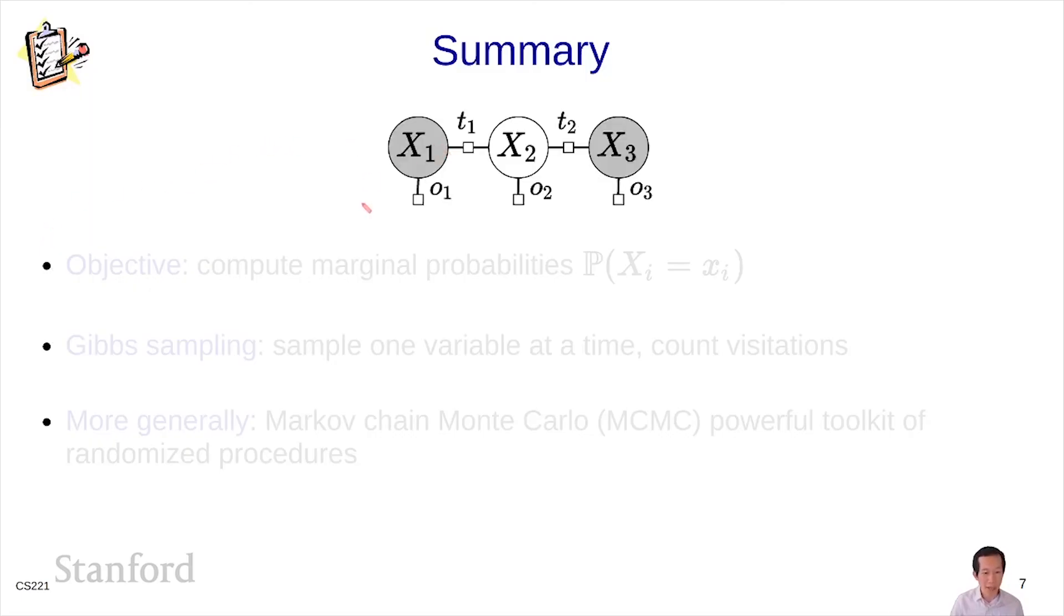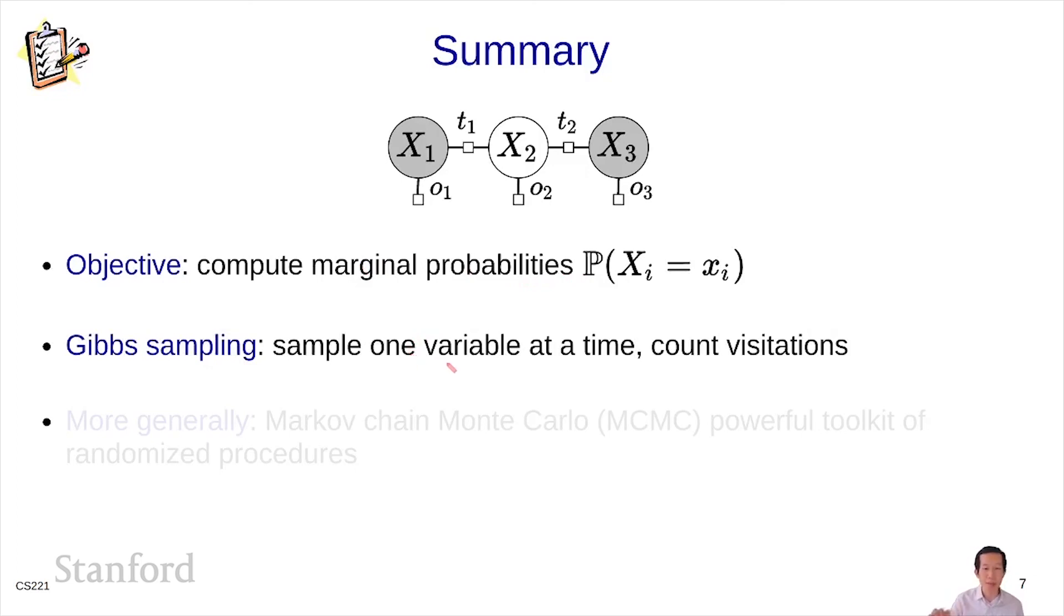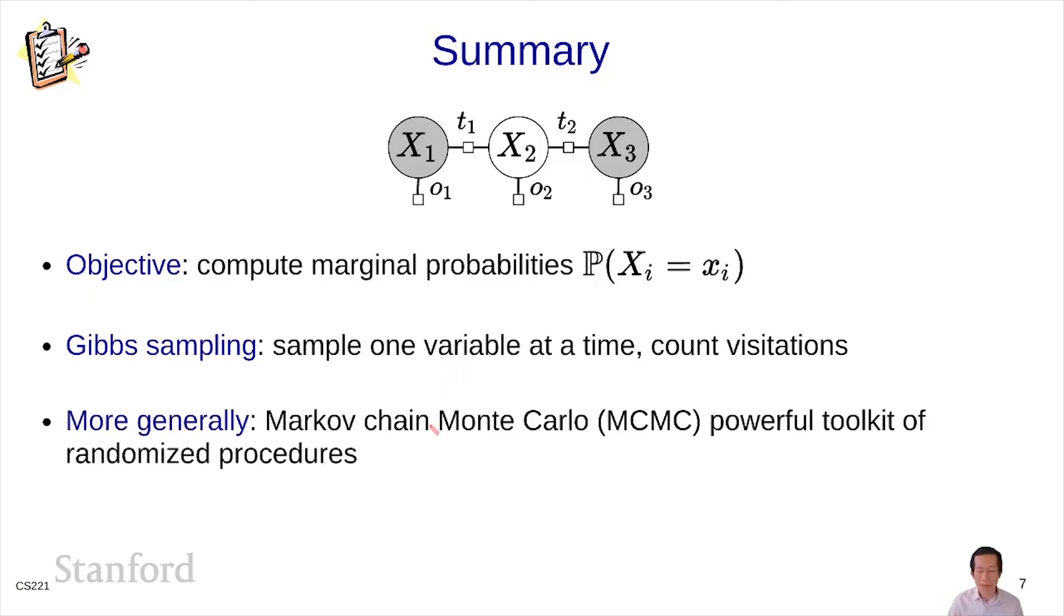So wrapping up, we looked at computing the marginal probabilities of a Markov network. We saw that Gibbs sampling did this by sampling one variable at a time and counts visitations to each of the values for a given variable. It's one of these kind of astonishing things that Gibbs sampling is so carefully constructed that it actually kind of works, and you can prove lots of interesting theorems about it. Finally, Gibbs sampling is just the first taste of a much more broad class of techniques called Markov chain Monte Carlo, which are used to produce richer ways of estimating probabilities in Markov networks. All right, that's the end of this module.